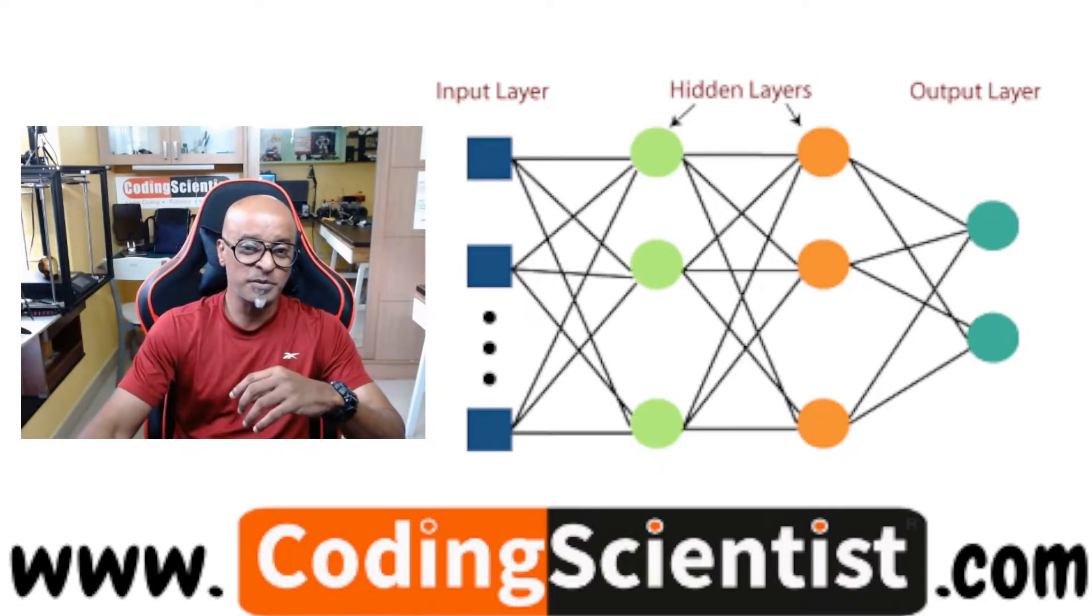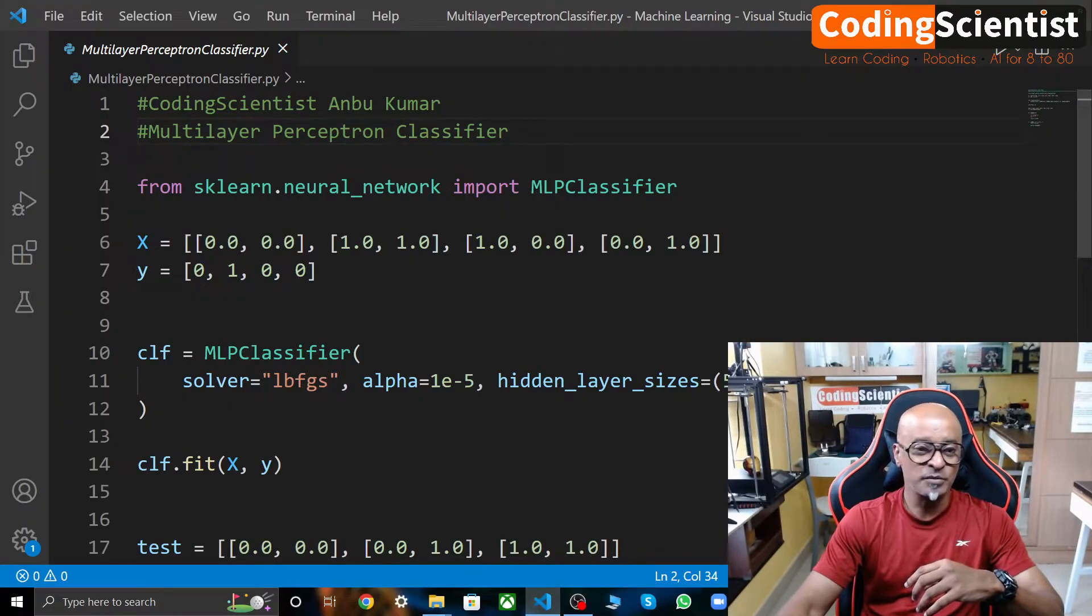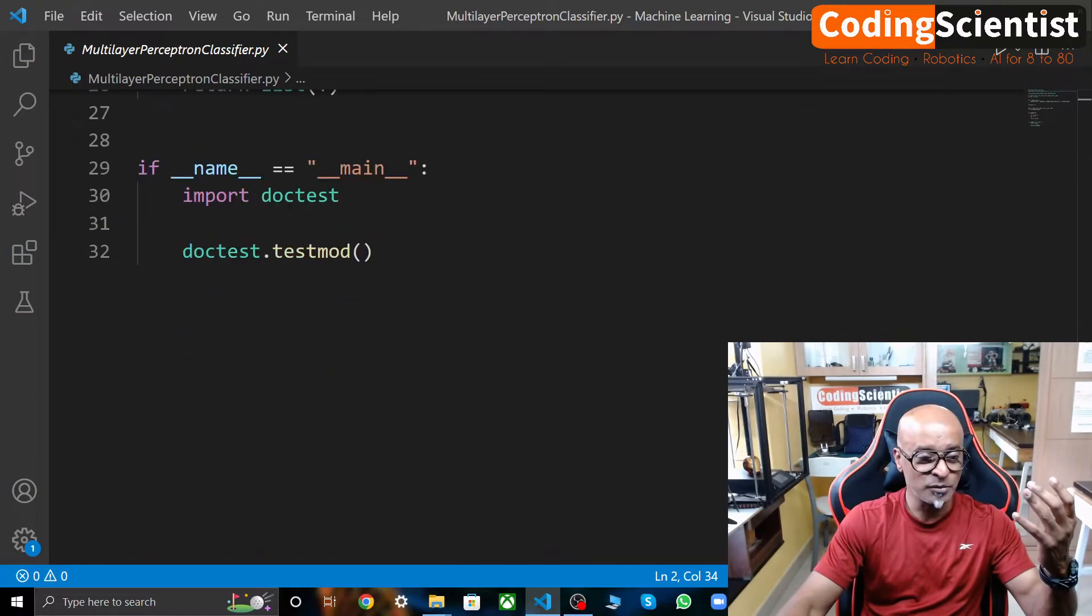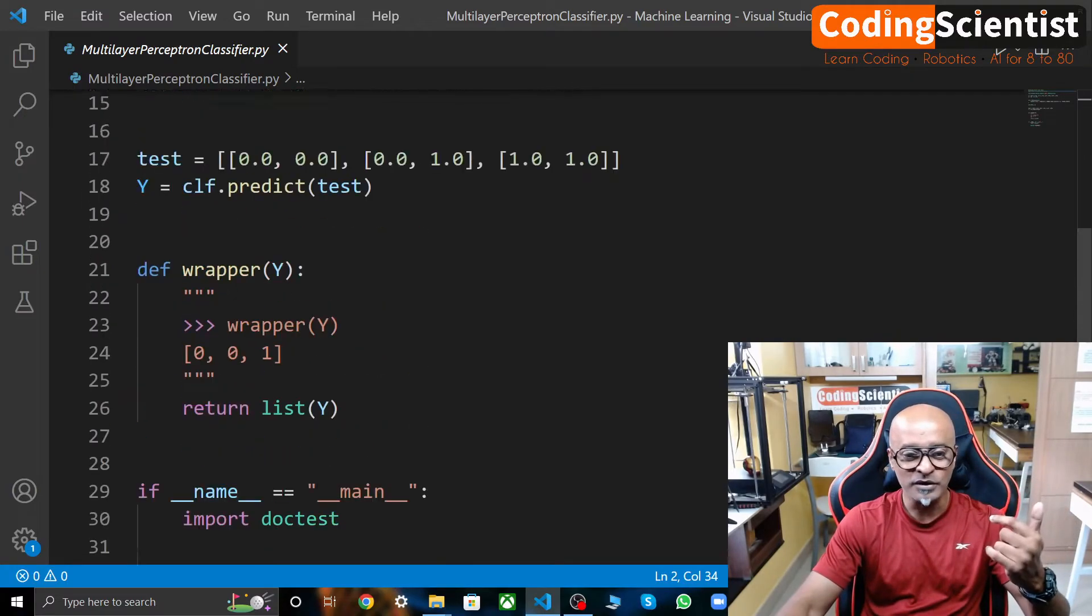The explanation seems pretty simple and easy, but if you look at the code, it's a lot simpler. It's just about 32 lines of code.